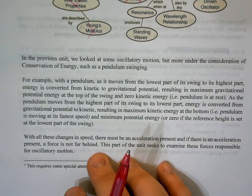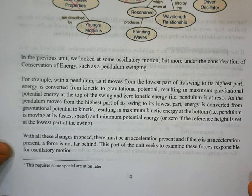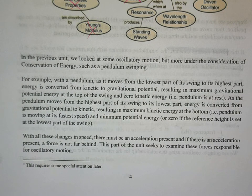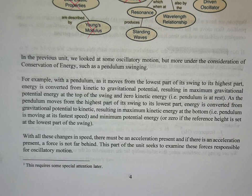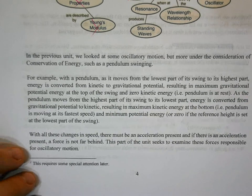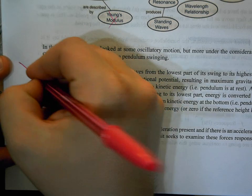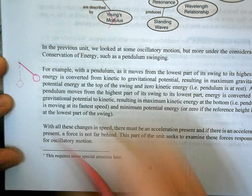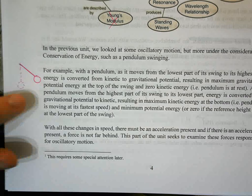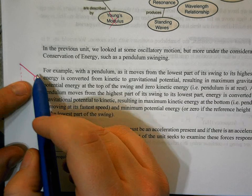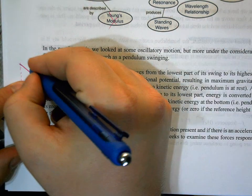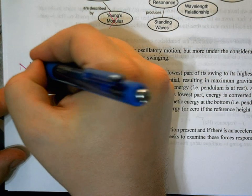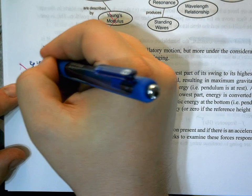So when we did the previous unit, we did look at oscillatory motion with a pendulum swinging, but we didn't call it that. And we looked at it more from the lens of conservation of energy. So for example, when we have a pendulum swinging, here's my little pendulum. It's kind of at the top of its swing, and then a little bit later, it's going to end up at the bottom of its swing. So we know at the top of the swing here, there is no kinetic energy because it's at rest. And then at the top, we would say that potential energy is a maximum.